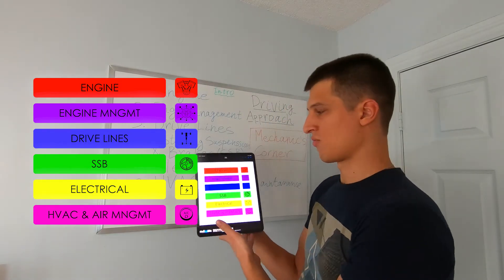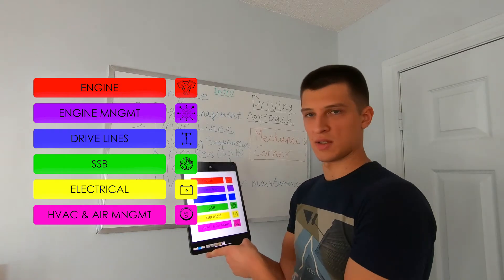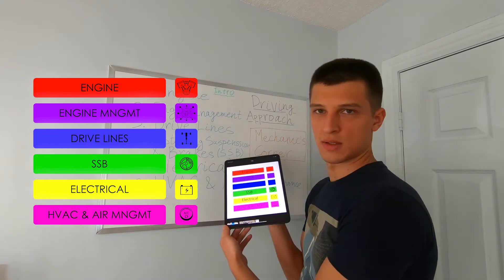As you can see, the engine is red here and engine management is purple, drivelines is blue, SSB is green, electrical is yellow, and the last one HVAC and air maintenance is pink.